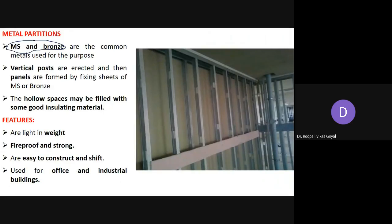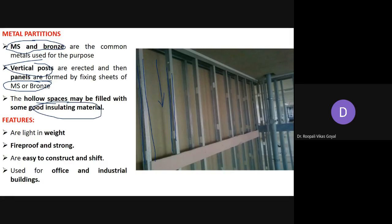Metal partition uses either mild steel or bronze, which are the commonly used metals for forming the partition wall. Vertical posts are erected and panels are formed by fixing sheets of MS or bronze. Any hollow space can be filled with insulating material. Features: they are light in weight, fireproof, strong, easy to construct and shift. They are generally used in offices and industrial buildings.